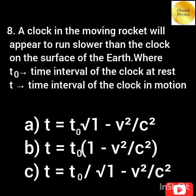A clock in a moving rocket will appear to run slower than the clock on the surface of the earth. In accordance with this, t is equal to.